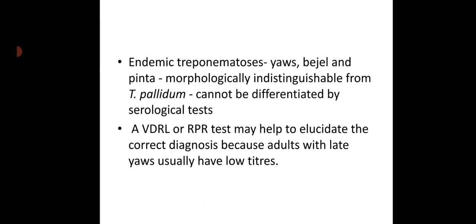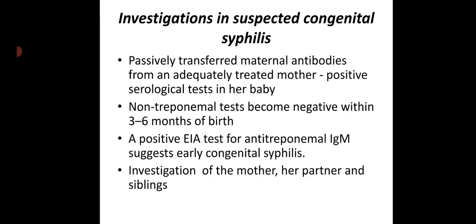A VDRL or RPR test may help elucidate the correct diagnosis because adults with late yaws usually have low titers. In suspected congenital syphilis, maternal antibodies are passively transferred, so there can be positive serological tests in the baby. Non-treponemal tests become negative within three to six months of birth. A positive EIA test for anti-treponemal IgM indicates early congenital syphilis. Investigation should also be done in the mother, partner, and siblings.